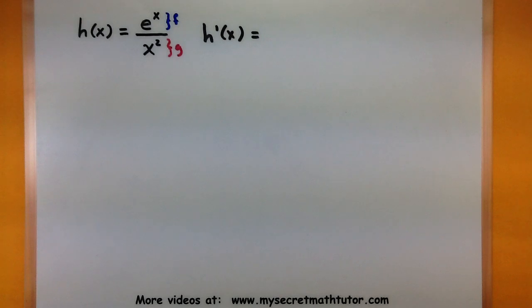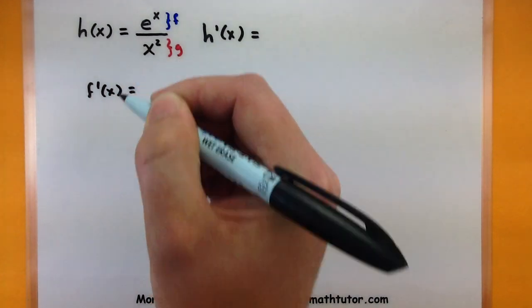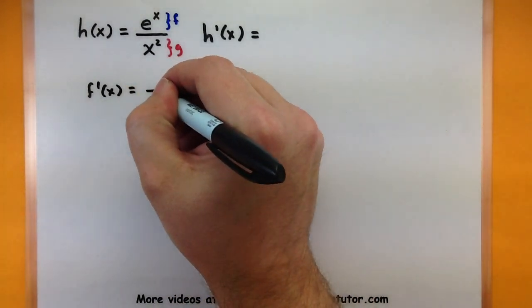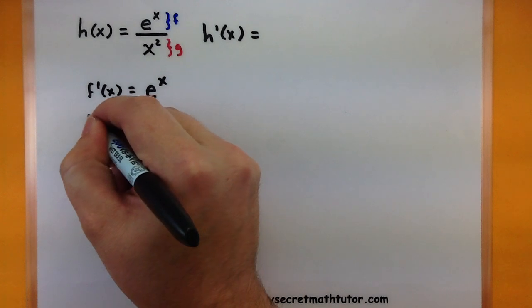So we want to find the derivative for f and for g separately. So let's see, what is the derivative of f? Well the top is e to the x and its derivative is also e to the x. So no change with that one.